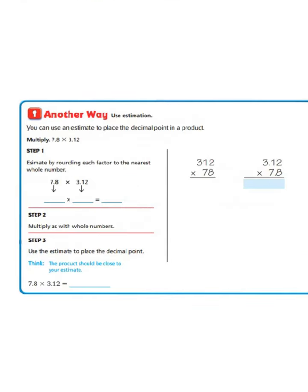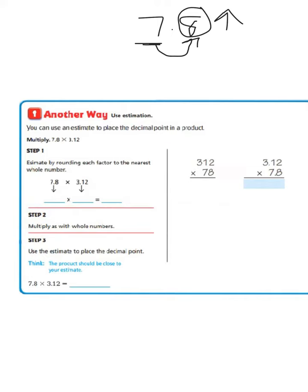Let's take a look at another strategy we can use to place a decimal point in a product — using estimation. You can use an estimate to place the decimal point in a product. We're multiplying 7 and 8 tenths times 3 and 12 hundredths. The first step is to estimate by rounding each factor to the nearest whole number. For 7.8, we look at the ones position — we have 7. To round, we look to the right and see 8. Since five or more raises the score, we round 7 up to 8. So 7 and 8 tenths rounded to the nearest whole number is 8.